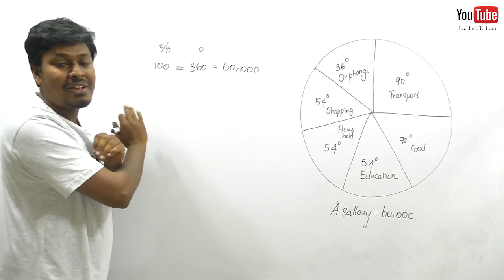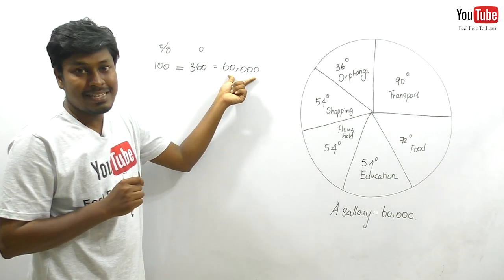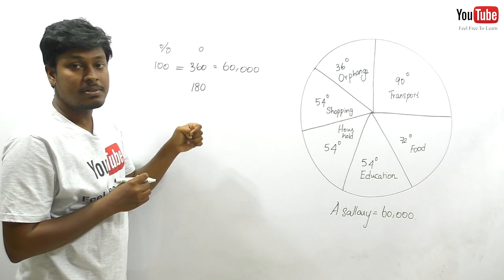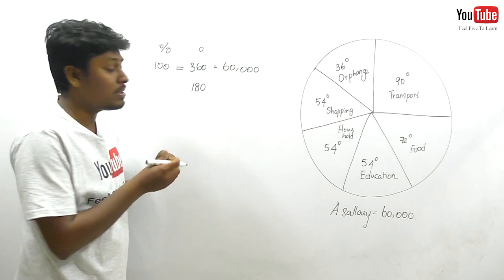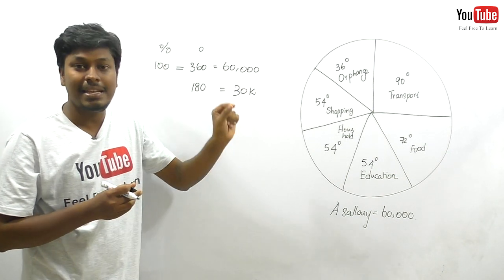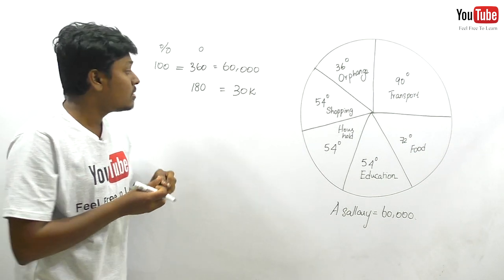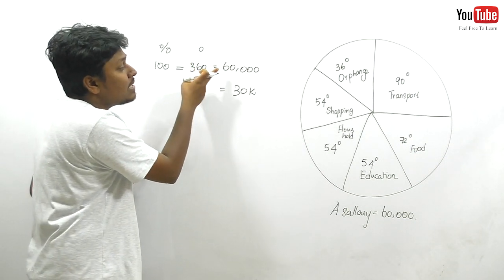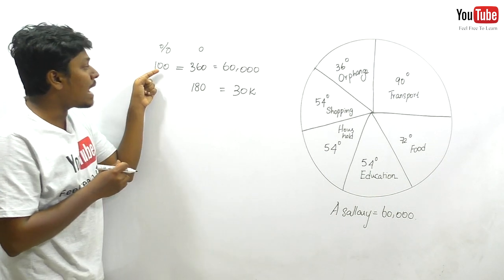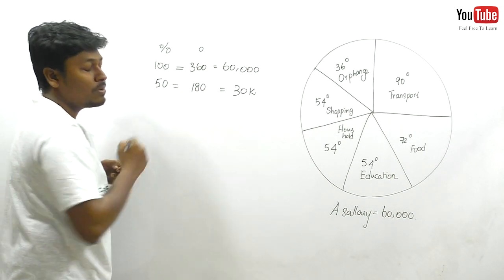Starting from 360 degrees = 60,000, divide by 2: 180 degrees = 30k, which corresponds to 50%. Divide again by 2: 90 degrees = 15k, which corresponds to 25%. Write these as shorthand — use 30k and 15k, not 30,000 and 15,000 — to avoid wasting time writing extra zeros in your exam.